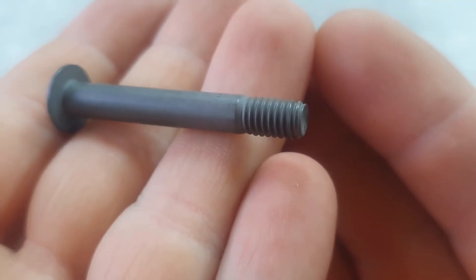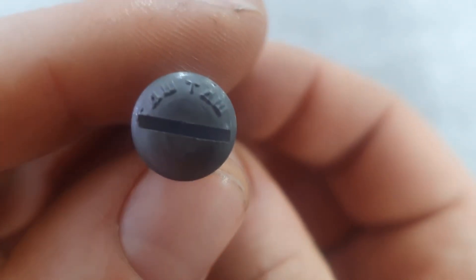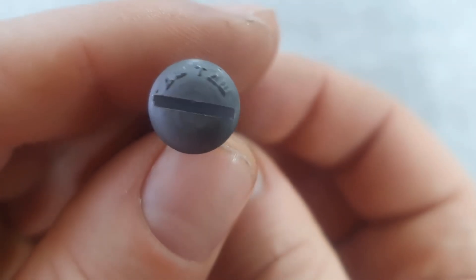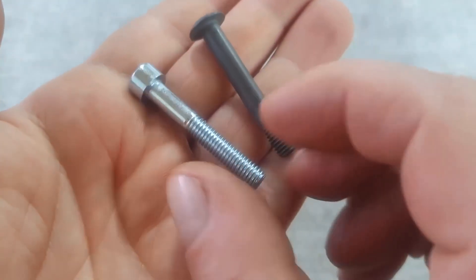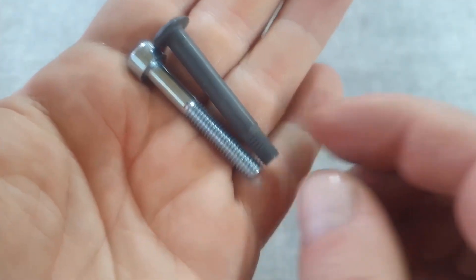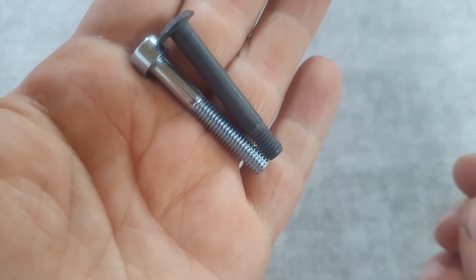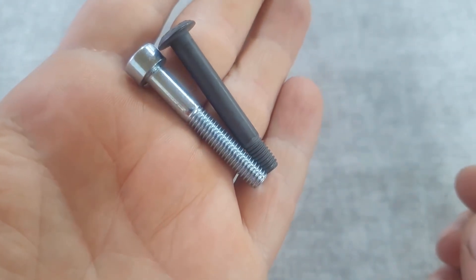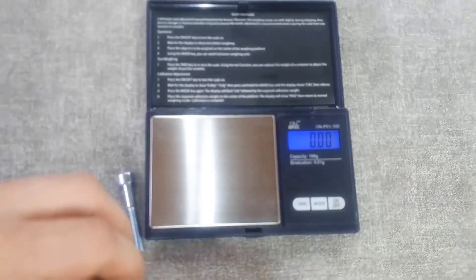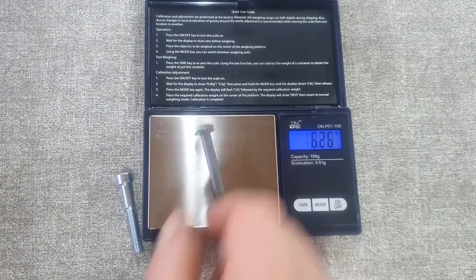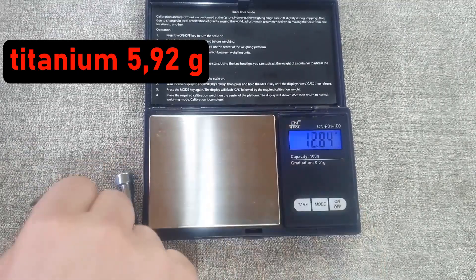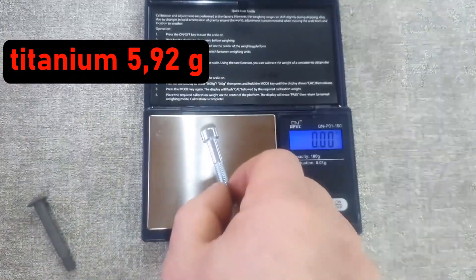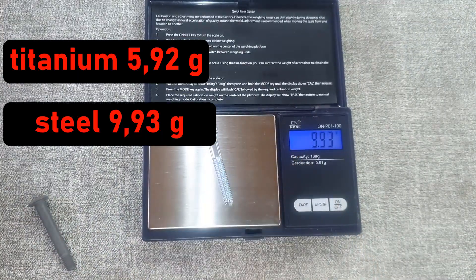I couldn't find a steel bolt with the exact same shape. But I found one that's identical in size, only the cap has a slightly different shape. If we weigh them, we'll understand the main feature of titanium bolts. A titanium bolt weighs almost 6 grams, while a steel bolt of the same size weighs 10 grams. That is, the mass differs almost by half.